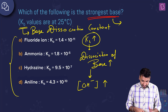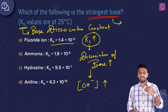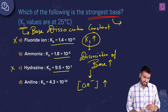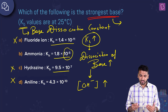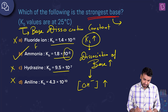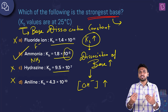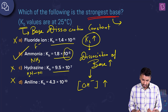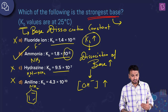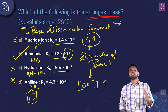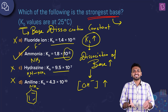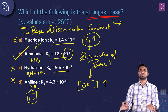Simply look at the Kb values: 10⁻¹¹ — A cannot be the answer; 10⁻⁷ — C cannot be the answer; 10⁻¹⁰ — D cannot be the answer. Ammonia with 10⁻⁵ is the highest. Fluoride ion is F⁻, ammonia is NH₃, hydrazine is NH₂-NH₂, and aniline is an aromatic benzene derivative. The highest Kb gives the strongest base, so option B — ammonia — is the correct answer.